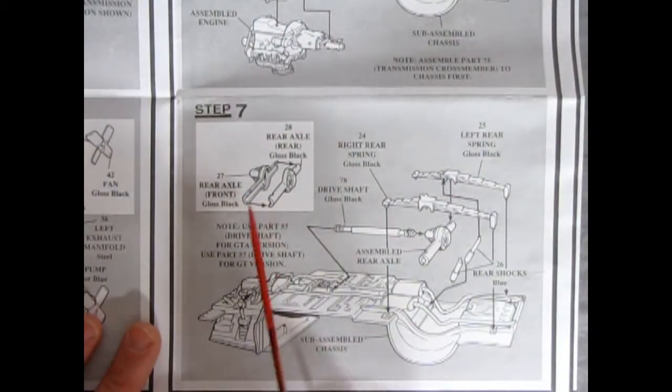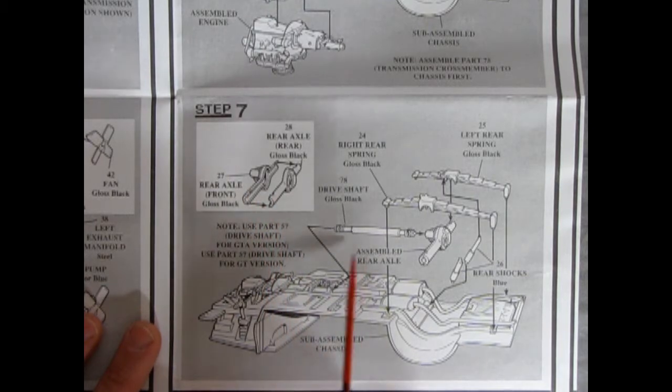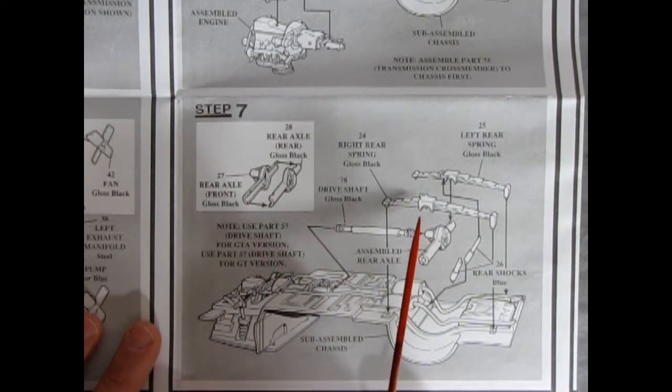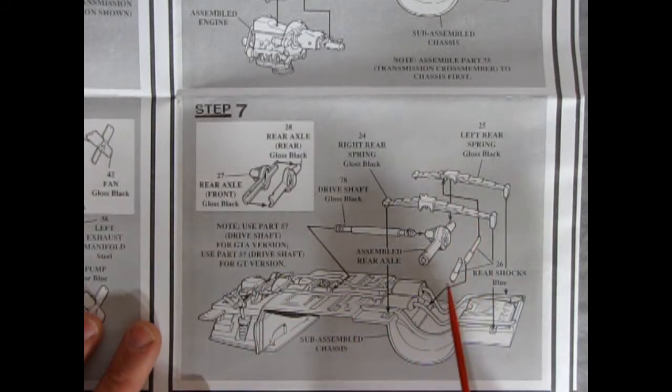And then we get into step seven. Which of course shows your rear differential and rear axle with differential. Gluing together its two piece unit. Then you've got your drive shaft. Your right and left hand leaf springs and the shock absorbers on the back.